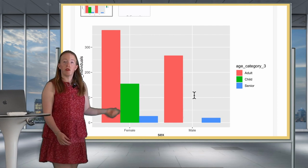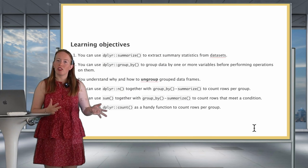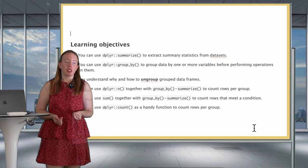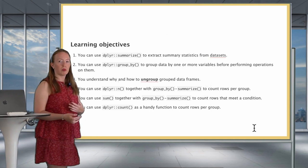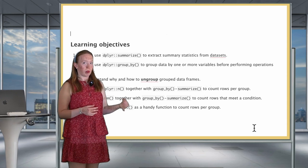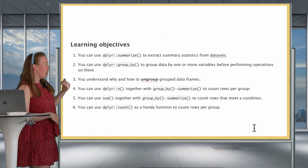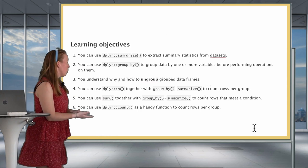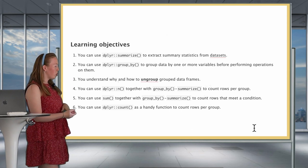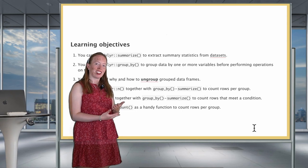Congratulations for today — you really did a nice job mastering group_by and summarize. You now know how to use summarize to extract summary statistics, how to use group_by for single or multiple variables, why and how to ungroup after grouping, how to use n() with group_by and summarize to count rows, how to use a condition within sum() for specific counts, and how to use the count() function for quick row counting. Thank you so much for following this lesson. Bye-bye.